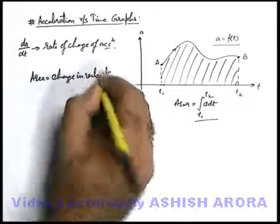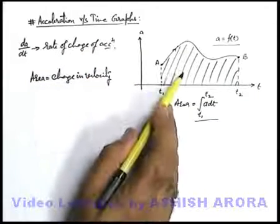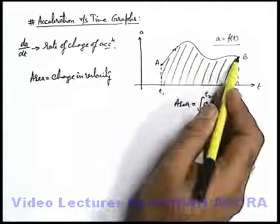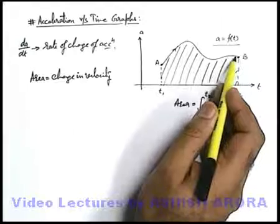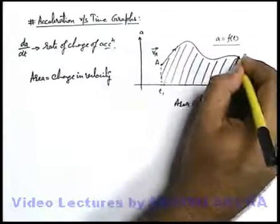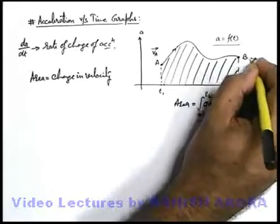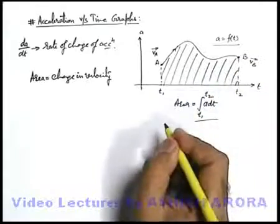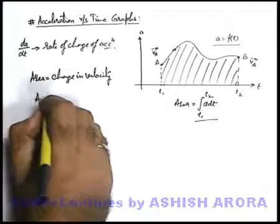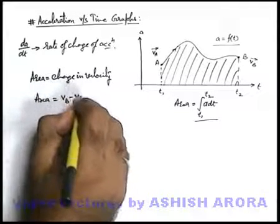In some of the questions, this area will be quite important to calculate because it will directly give us a change in velocity from initial to final point. Say at point a the particle has a velocity va and at point b velocity would be vb. Then in this situation we can simply write this area will give us vb minus va.